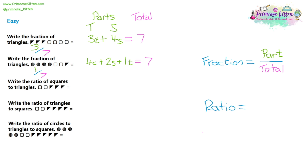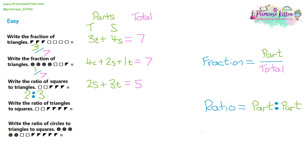Question three is different — we're not being asked for a fraction, we've been asked for a ratio. The way we write a ratio is: first part, then a colon symbol, then the second part. We have two squares and three triangles, total five. The ratio of squares to triangles is two colon three. Notice we don't use the total — we just use the two parts.